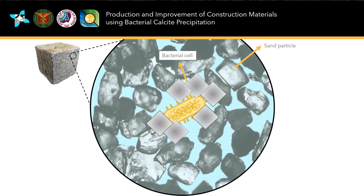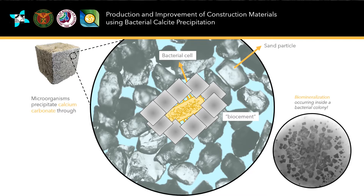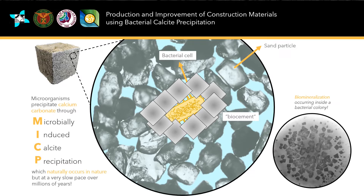The calcium carbonate then acts as the bio-cement that will bind sand particles together. So there is an alternative to cement after all — this activity is performed by bacteria through biomineralization, specifically called MICP, or microbially induced calcite precipitation.